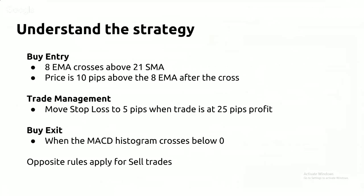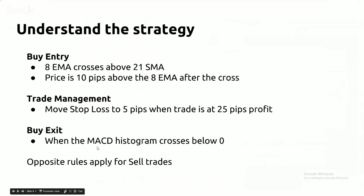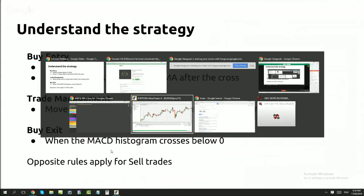So, understanding the strategy — this is the strategy sent by Mac, who is in the audience today. I've simplified it somewhat, keeping the majority of things in. For a buy entry: the 8 EMA crosses above the 21 SMA; price should be 10 pips above the 8 EMA after the cross as a buffer; move the stop loss to 5 pips when the trade is at 25 pips profit; and exit when the MACD histogram crosses below zero. Opposite rules apply for sell trades.